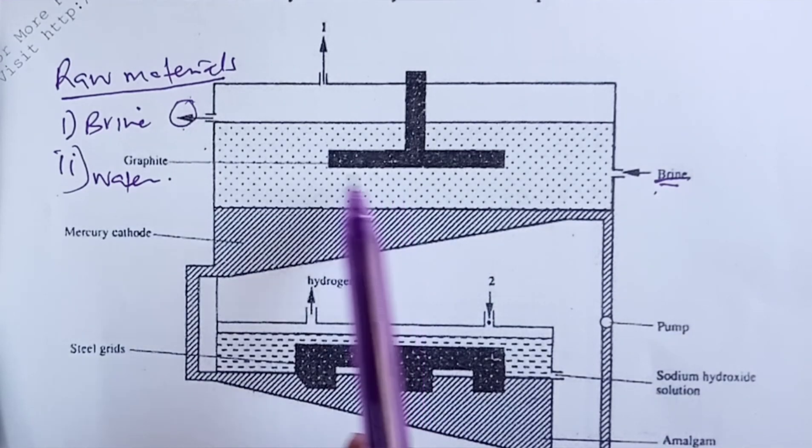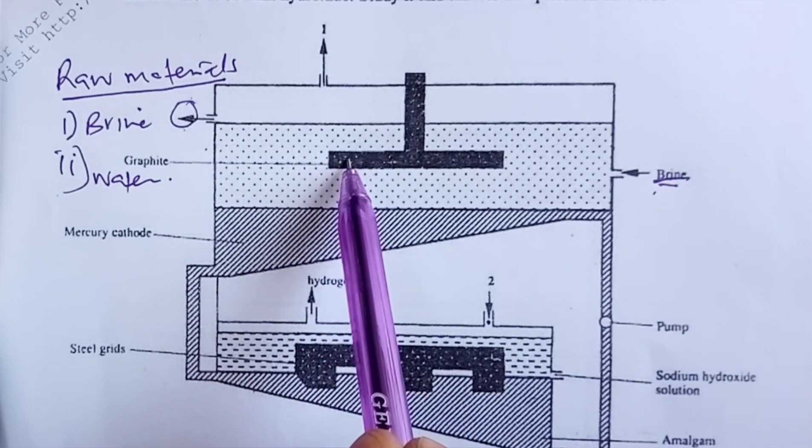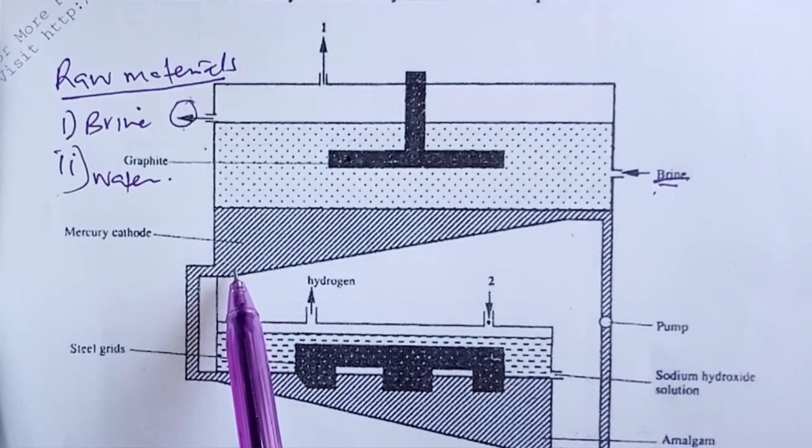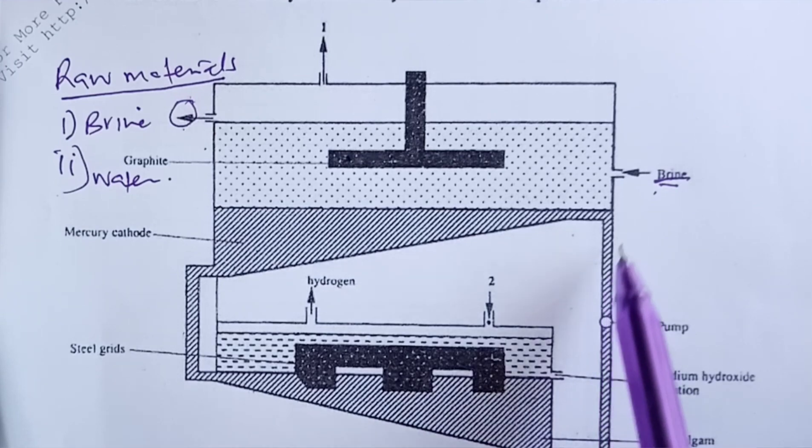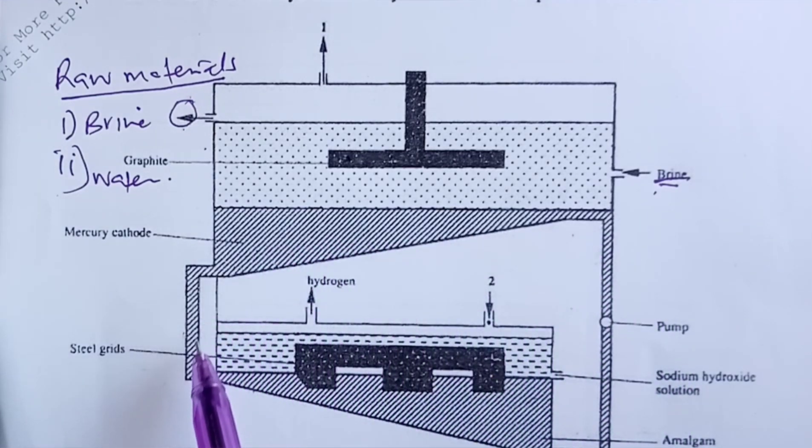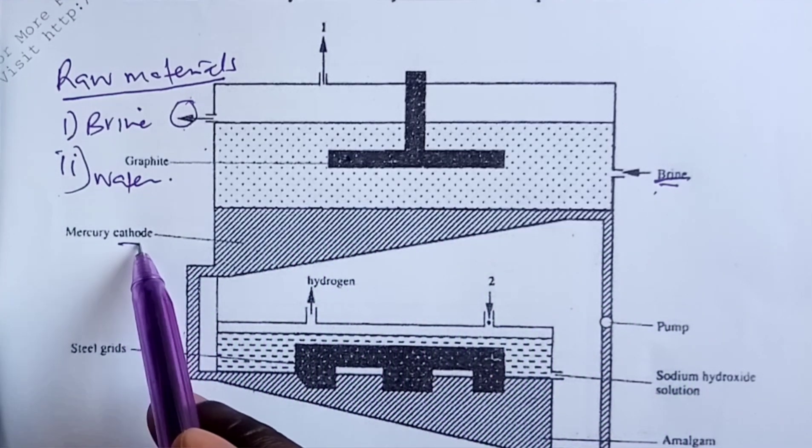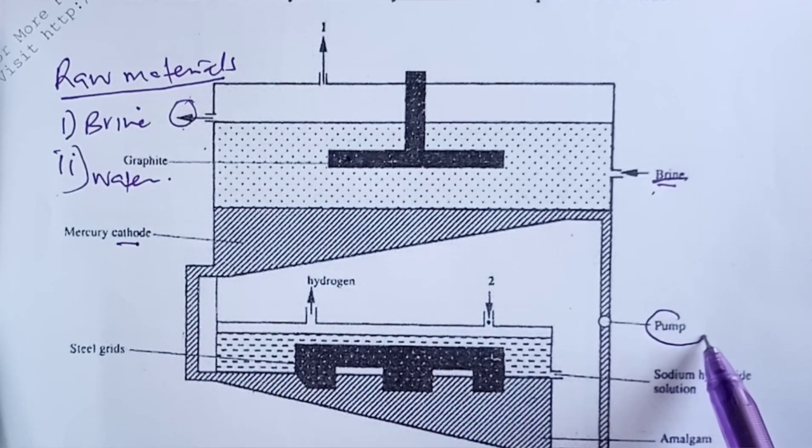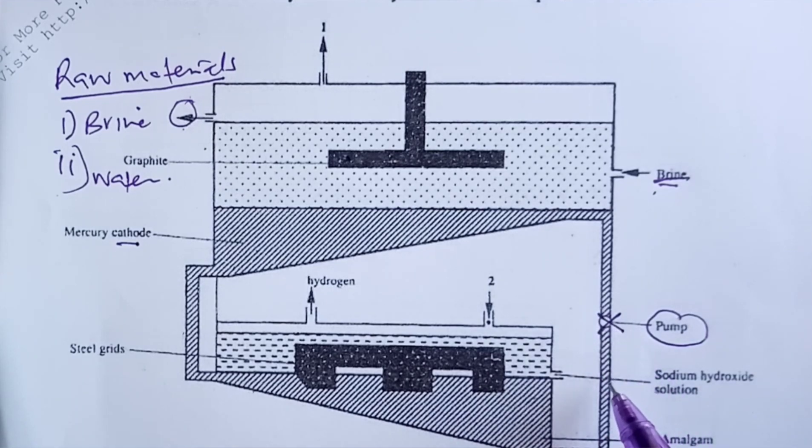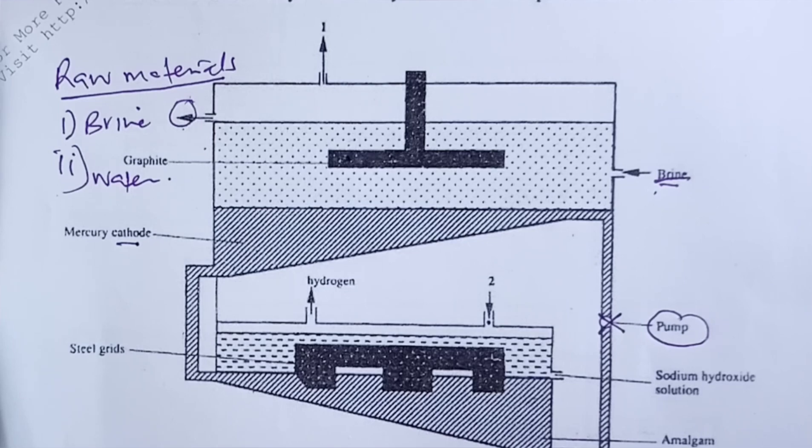Moving on, we have graphite acting as anode and a moving mercury column that circulates between the lower cell and the upper cell being our cathode. The movement of mercury is controlled by the pump at this point. Let us now have a look at the reactions that take place at anode and cathode.